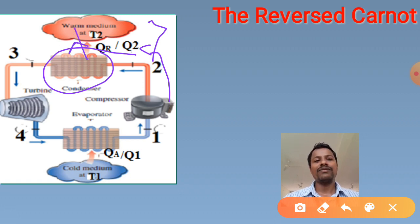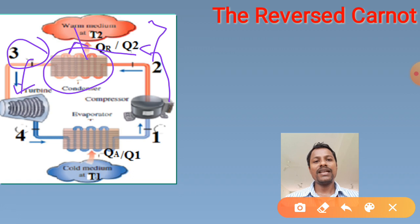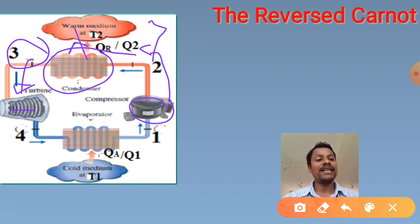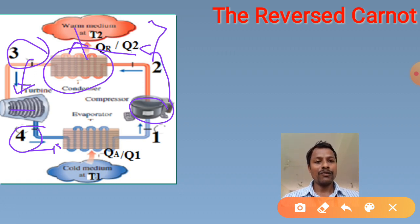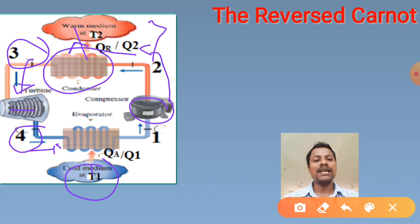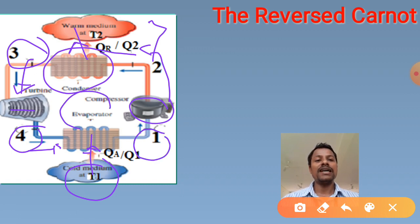The heat pump pumps heat from the cold environment into the warm space using work input - widely used in cold countries where outside temperature is very low and heat is needed inside. Heat pump discussion is out of scope at present. Inside the refrigerator: evaporator coils, freezer compartment, compressor, and condenser coils are all arranged together.